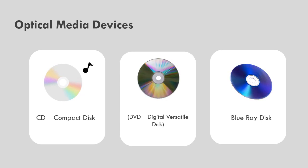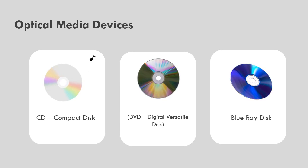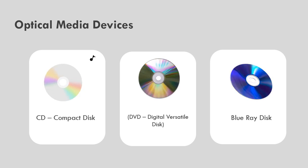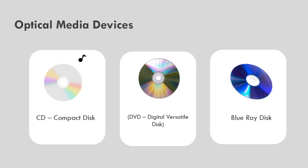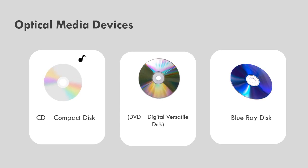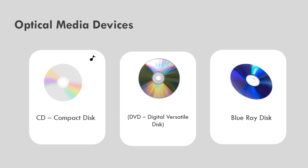The capacity of DVD disks ranges from 4.7 gigabytes, 8.5 gigabytes, 15 gigabytes, to 30 gigabytes. Blu-ray discs can store data on several levels, with 25 gigabytes on each level.